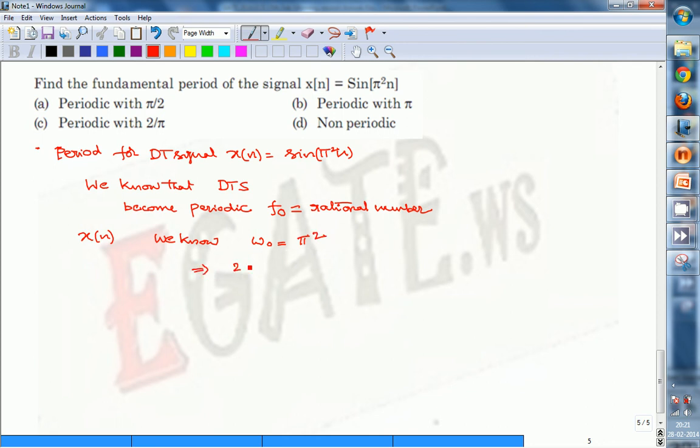Here, 2πF₀ equals π². Then π will cancel, so F₀ equals π/2.